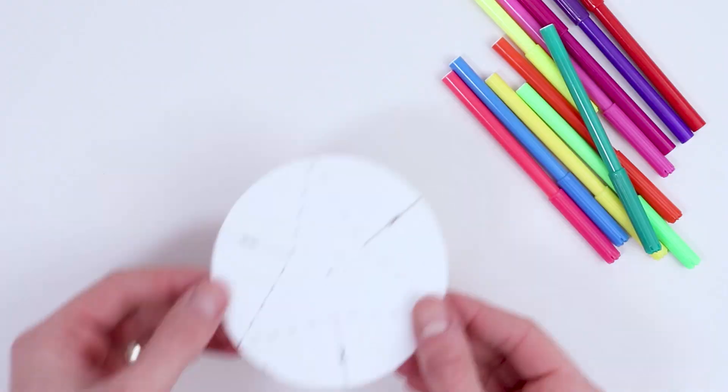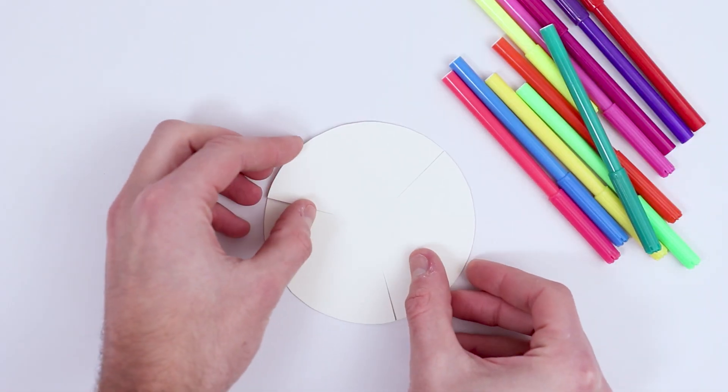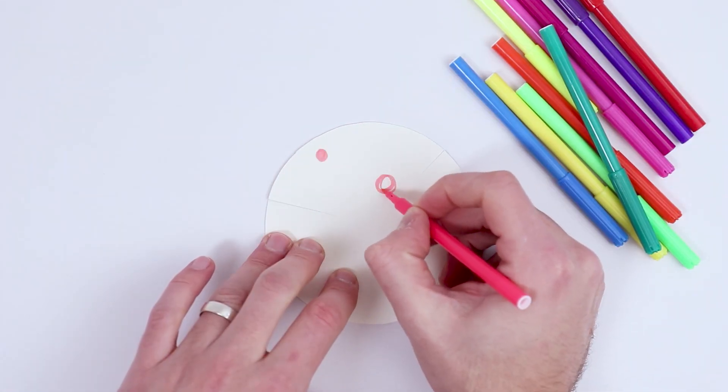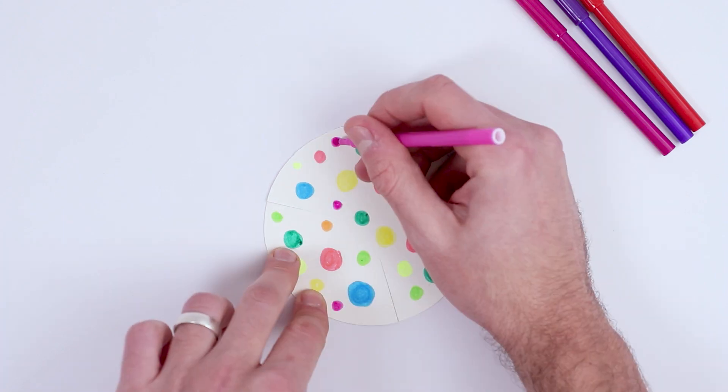Now if you like, you can decorate the fan blades of your windmill. Simply flip it upside down and use felt tip pens to decorate it however you want.